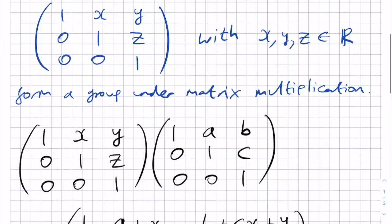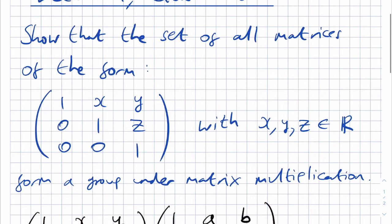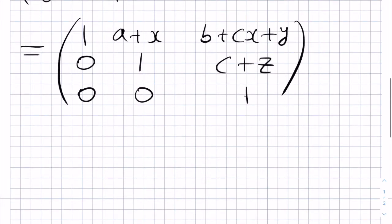And so, this set of matrices is closed under matrix multiplication. I will write closure and then a tick. Or, alternatively, matrix multiplication is a binary operation.